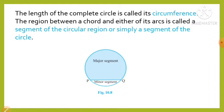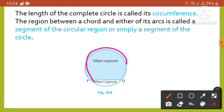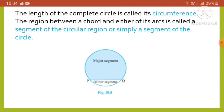The length of a complete circle is known as its circumference. The region between a chord and either of its arcs is called a segment of the circular region, or simply a segment of the circle. There are two types of segments: the major segment and the minor segment, as shown in figure 10.8.